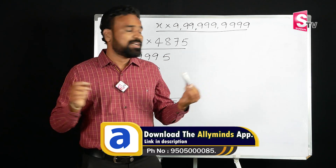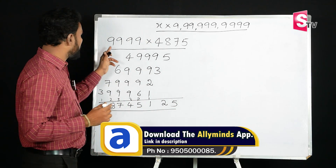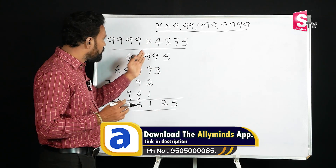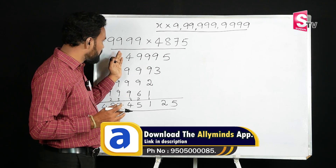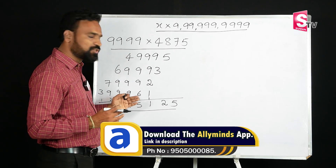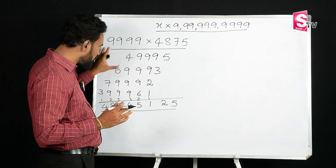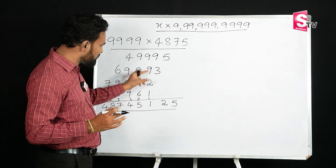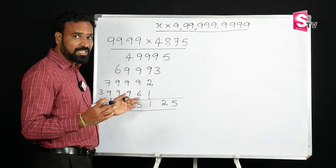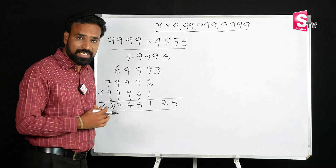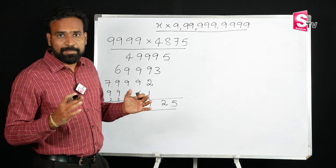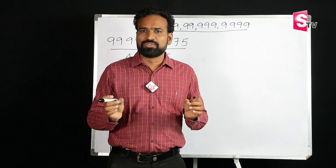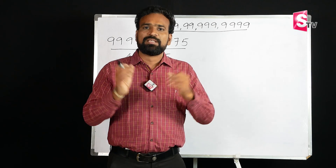Are you ready? First of all, let's take an example: 99 into 4875. The school method for 4875 takes many steps. But in Vedic Mathematics, we will do the same thing in 2 to 3 seconds — that is by using simple subtraction.